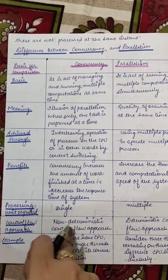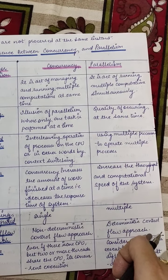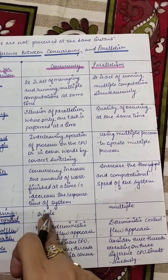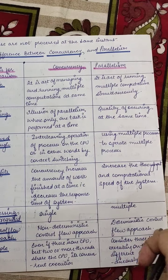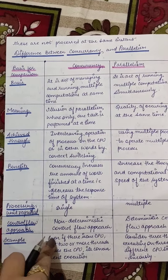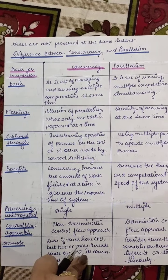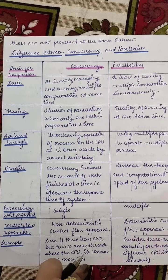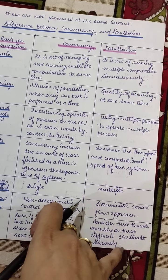Next is the control flow approach. Concurrency uses a non-deterministic control flow approach — because it uses context switching, you cannot determine which process will be scheduled next. But in parallelism, there is a deterministic flow where all tasks are scheduled at the same time on multiple processors. Example: even if there is one CPU but two or more threads share that CPU, it is concurrent execution. In parallelism, consider three threads executing on different CPUs simultaneously — that is parallelism.